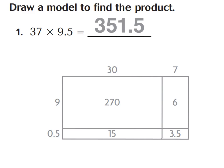Let's look at this first example. It shows 37, which we broke up into a 30 and a 7, times 9 and 5 tenths. When we make our box method, we just break it up into our place values and find all of our partial products. 9 times 30 wholes is 270 wholes. And then 30 times 5 tenths is 15 wholes — I can go ahead and prove that: 5 tenths times 0 is 0, 5 times 3 is 15.